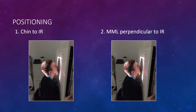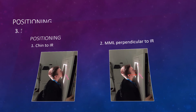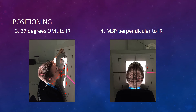When positioning the patient, the first step is to place the patient's chin to the image receptor. Next, maneuver the patient's head and neck to place the mentomeatal line perpendicular to the IR. To ensure the MML is perpendicular, check to see that the OML is 37 degrees to the IR. The mid-sagittal plane must be perpendicular to the IR to make sure there is no rotation or tilt in the final image.